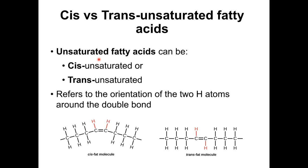Trans unsaturated fatty acids are not normally found in living organisms — they are not produced by living organisms. They are only produced through hydrogenation of oils in industrial processes. All unsaturated fatty acids produced by living organisms will be in the cis form; however, through ingestion we tend to consume quite a lot of trans unsaturated fatty acids. The difference lies in how the hydrogen atoms on the two carbons involved in the double bond are oriented — if they are on the same side, it is a cis unsaturated fatty acid.